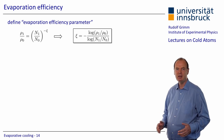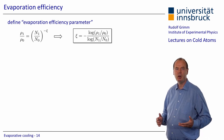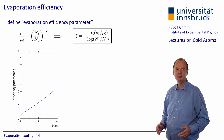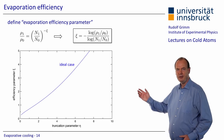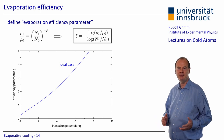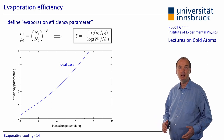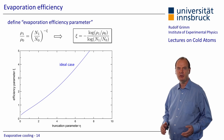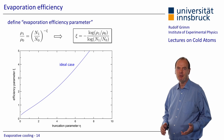For a sequence of repeated evaporation steps with efficiency Xi, one can say that by losing one order of magnitude in particle number, one gains Xi orders of magnitude in phase space density. This graph shows what our model predicts for the efficiency parameter Xi as a function of the truncation parameter eta for the ideal case that there are no other losses apart from evaporation. One sees that in this ideal, but somewhat unrealistic case, the efficiency has no limit.